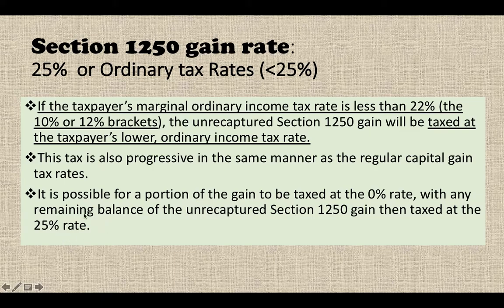Essentially, it uses the long-term capital gain rates — 0 percent, 15 percent, and 20 percent — except instead of 20 percent, you use 25 percent. So if you're below a certain bracket, you may be taxed at a zero percent rate.